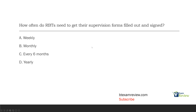How often do RBTs need to get their supervision forms filled out and signed? This is a fluency question — just something you need to know. RBTs must be supervised, and you have to fill out supervision forms and get them signed. How often? Weekly, monthly, every six months, or yearly? You need to do them monthly. You have a required amount of supervision per month as an RBT, and each month you have to get these filled out and signed by your supervisor in case the board ever audits you — proof that you are receiving your supervision. The answer is B: monthly.